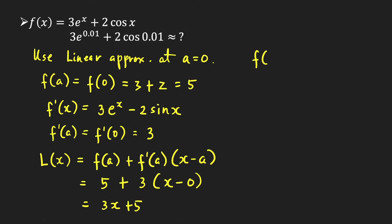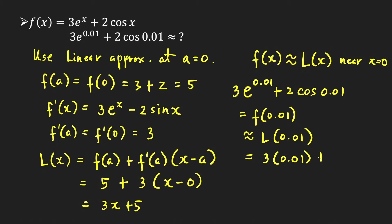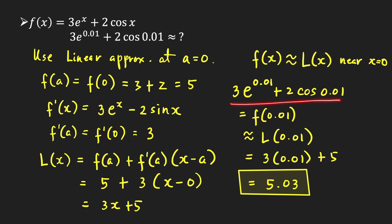So f(x) is approximately equal to L(x) near x equals 0. We can now use this fact since x equals 0.01 is close to 0. So 3e raised to 0.01 plus 2 cosine of 0.01, which equals f(0.01), is approximately equal to L(0.01) = 3 times 0.01 plus 5, which equals 5.03. So this is our estimate for this function value.